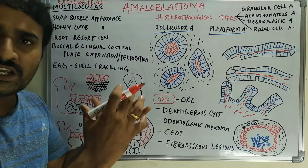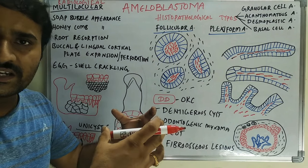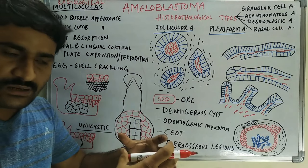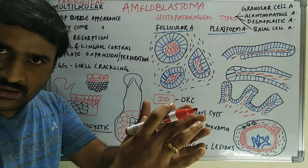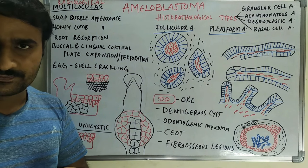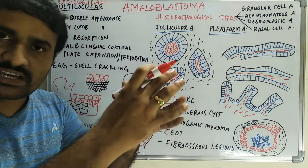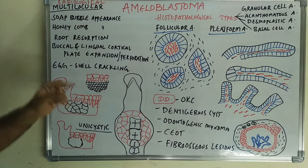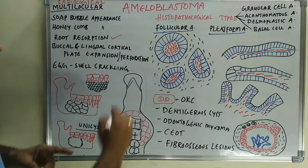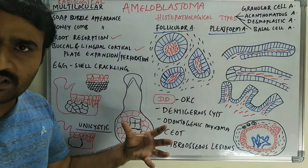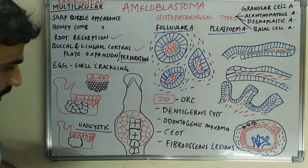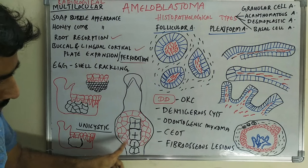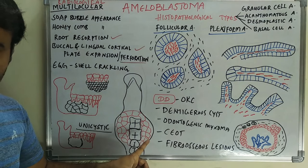The second important differentiating point is that in tumors, buccolingual expansion occurs on both sides — both the buccal and lingual cortical plates are expanded. In cysts, mostly only the buccal cortical plate is expanded. In the mandibular occlusal view of amyloblastoma, you can see both buccal and lingual cortical plate expansion with multicystic nature.